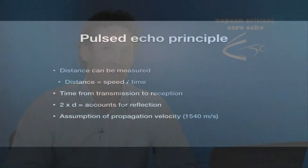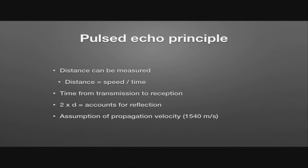Pulsed ultrasound is also important for determining the depth of a structure being imaged, which is obviously extremely important in ultrasound. This is known as the pulse echo principle. If I send out an ultrasound pulse and assume the velocity of ultrasound through tissue is 1,540 meters per second, I can calculate the time it takes from when I send out that pulse for it to be reflected off a structure and received back. Knowing that time and that speed, I can work out the distance travelled using distance equals speed times time.